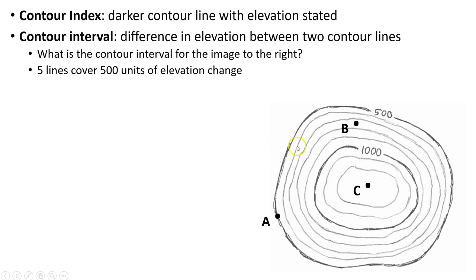The whole point is that we can see from this first contour index that's at 500, we have one, two, three, four, five, until we hit that next contour index at 1,000. So we know that because we have those five lines, the difference between 500 and 1,000 is 500 units of elevation change - whether that's meters or feet. We can take those five lines and divide by how much elevation is covered, 500. That gives us a contour interval of 100 units - 100 feet, 100 meters, whatever it may be.